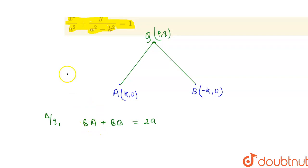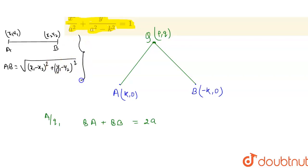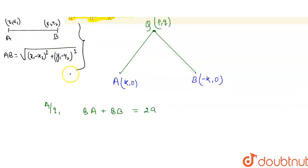Now QA will be found using the distance formula. If you have two points (x1,y1) and (x2,y2), the distance AB equals the square root of (x1 minus x2) whole square plus (y1 minus y2) whole square. Using this concept, QA equals the square root of (p minus k) whole square plus q square.